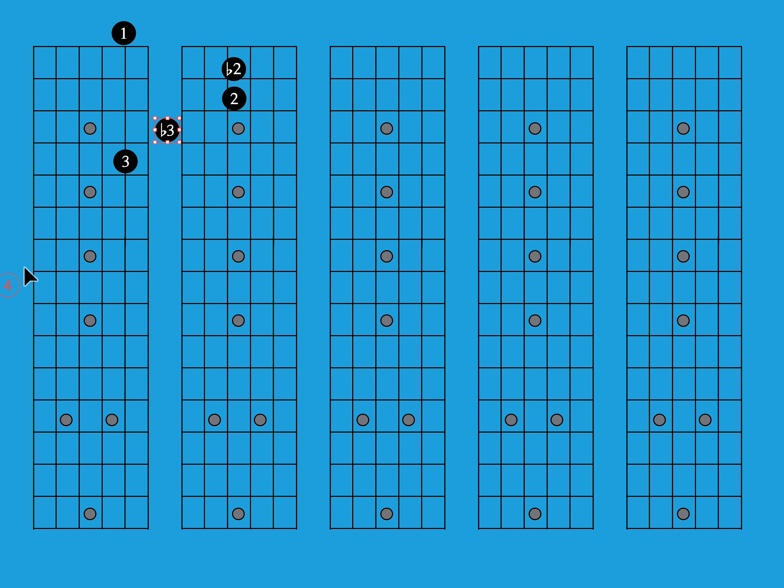And then five half steps away would be the fourth. And then six steps would be the flatted fifth. And then seven half steps. You see where this might get confusing if you're counting half steps. Well, it's seven half steps, but it's called a fifth. Why is it called a fifth? Because it's the fifth note of a major scale.